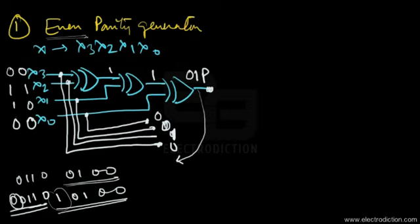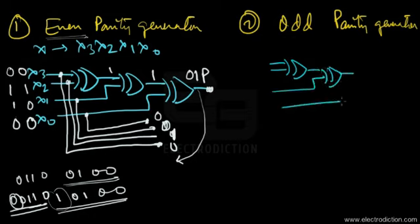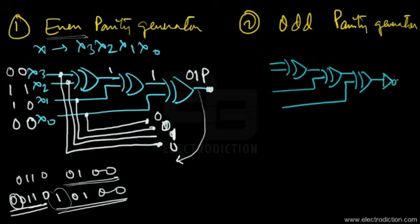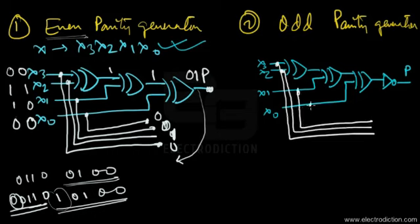Now let me show you how the odd parity generator works — it works in the reverse manner. The odd parity generator circuit is quite similar to the even parity generator circuit, with the exception that there is an extra NOT gate attached at the output, and that is where the parity bit is generated. Using the same inputs X3, X2, X1, and X0, the outputs are taken from these terminals.